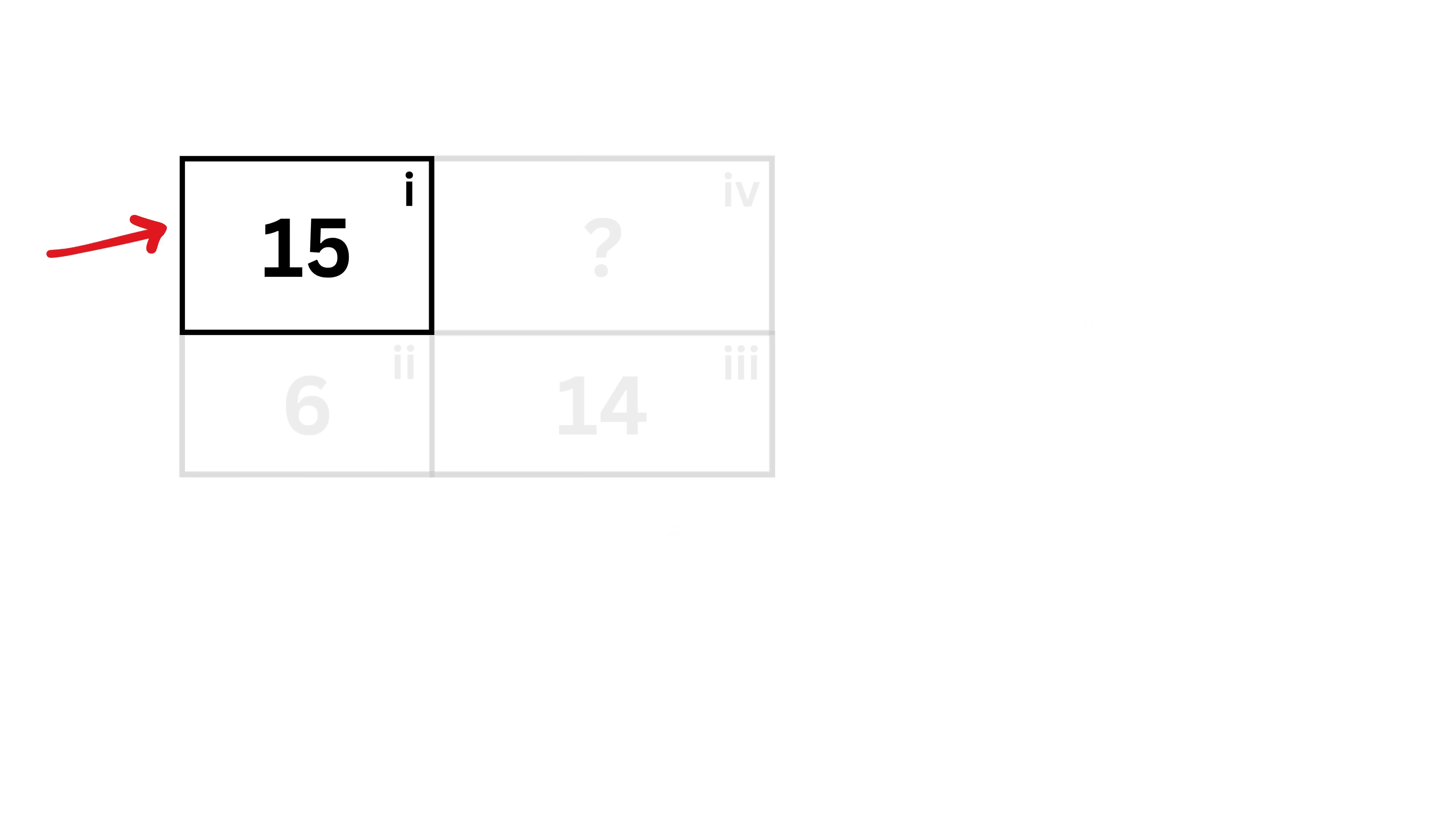Let us assume this side length is equal to A. So if this is A, then this will also be equal to A. Then assume this is B, and thus this will also be equal to B. Now if this is C, then this will also be equal to C. And finally, if this is D, then this will also be equal to D.